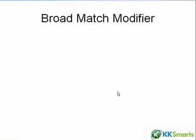The way broad matching used to work was that your keywords would match a search query if your keywords were in that search query in any order. What they did about two years ago was they broadened it — they called it extended broad match — and what they did was it would match on maybe just one of the words in your key phrase, or even a word that was similar in meaning to one of the words in your key phrase.